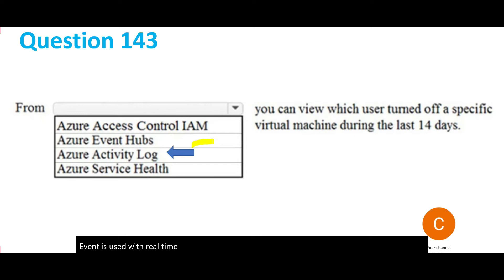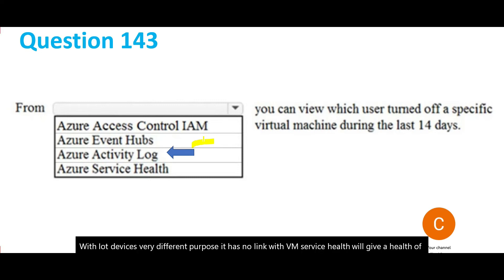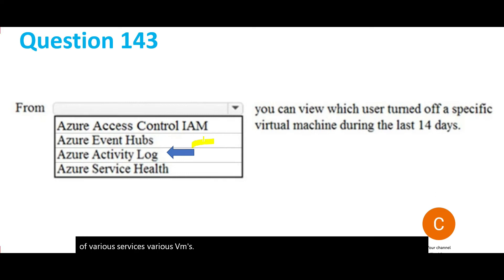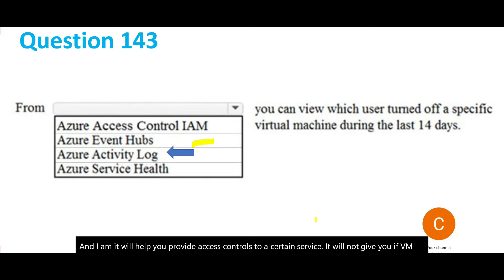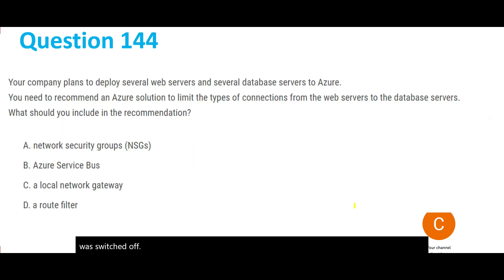Integration with IoT devices has a very different purpose and has no link with a VM's activity history. Service Health will give you the health of various services and VMs. IAM will help you provide access controls to a certain service — it will not tell you if a VM was switched off.